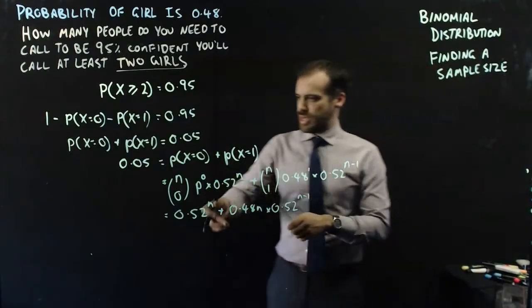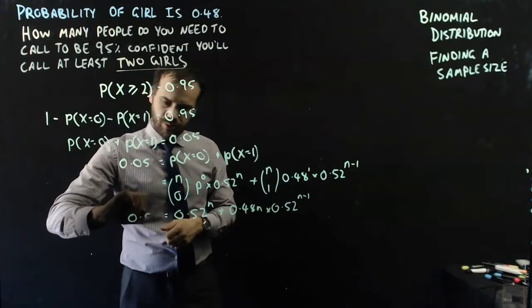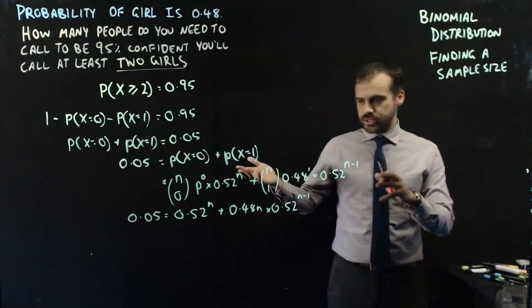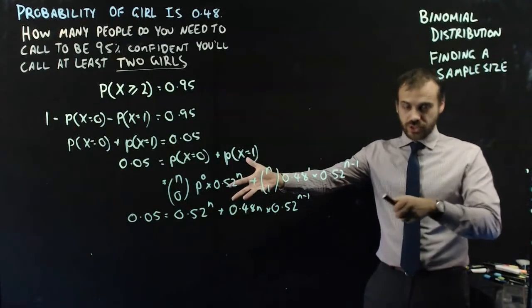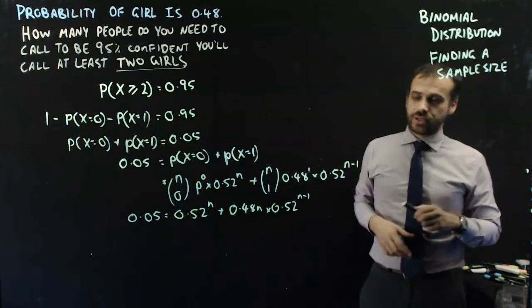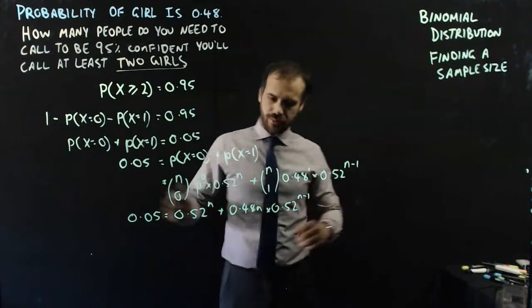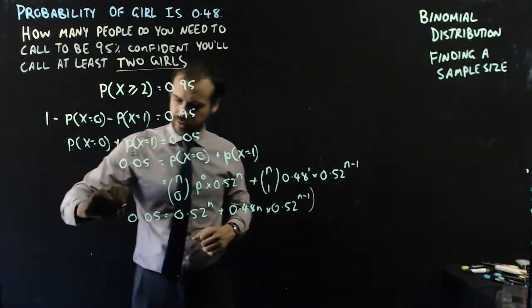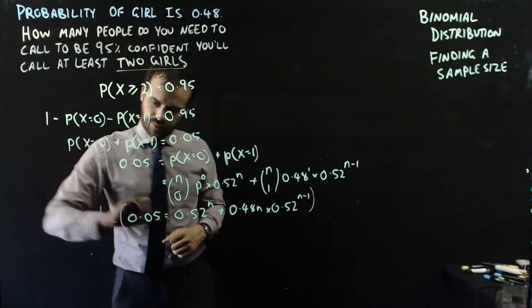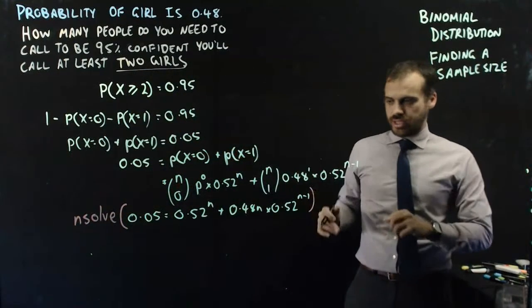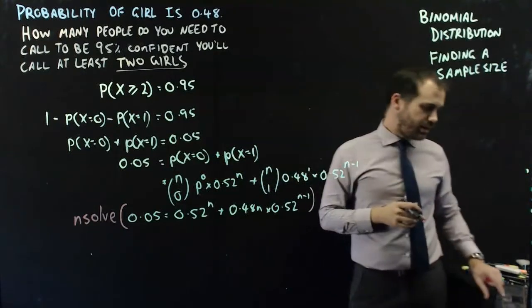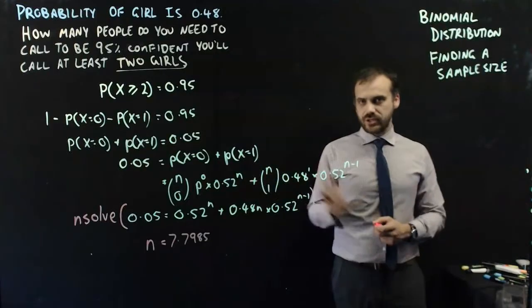All of that has to be equal to 0.05. You might be concerned thinking you have to solve that algebraically, but we don't have a way to solve it algebraically — however, we do have a calculator. You can type all of that into your calculator with n-solve at the front. The Casio will do that: n-solve, type it all in, and it should spit out a number. The answer is 7.7985.